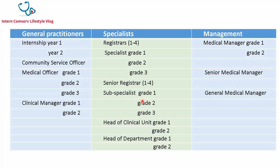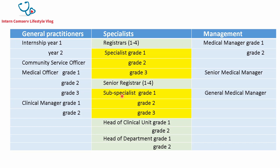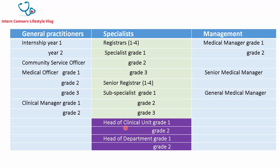The specialist stream is broken up into three aspects. One is a training aspect where a medical officer post-community service can become a registrar and train for four years to become a specialist. The second option is to become a sub-specialist — once you've registered as a specialist, you become a senior registrar and study a further four years to become a sub-specialist or super-specialist. So specialist grade one, two and three, and sub-specialist grade one, two and three are production grade specialists. Finally, we come to the supervisory specialist, which is the head of clinical unit grade one and head of department grade one and two.